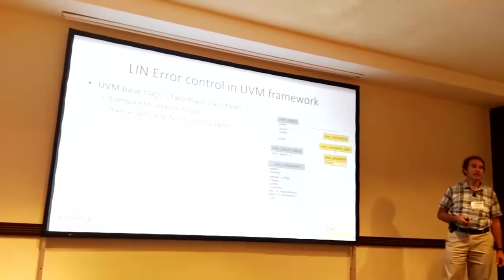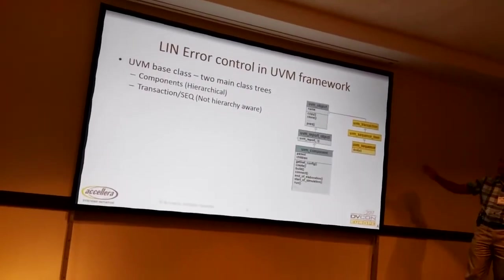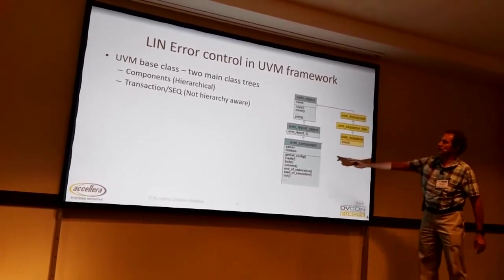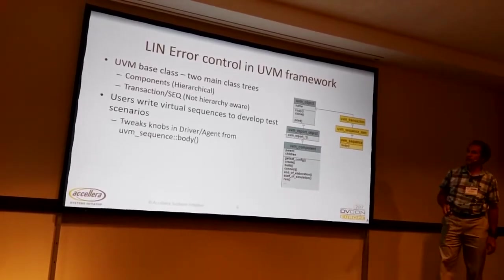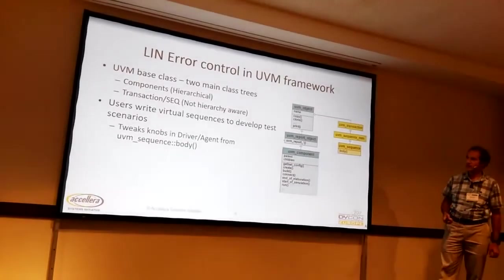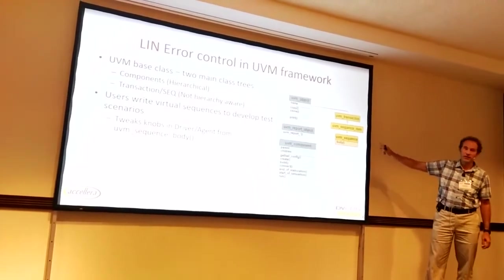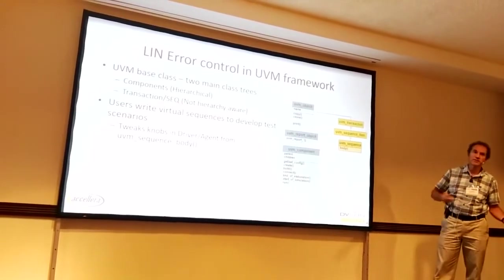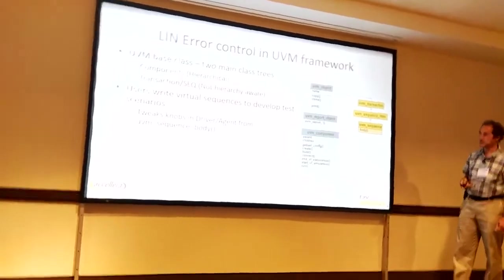So where do we put all this type of control information? In UVM you basically have two classes: components, which are hierarchical, and transactions or sequences, which are not aware of the hierarchy they're working inside. Users write sequences and virtual sequences for their tests, and they need to be able to access information from the sequence to inject those errors. But that information is sometimes stored over inside the UVM component — there are multiple ways of storing those different knobs. In GoToUVM we'll show you one style for doing this.